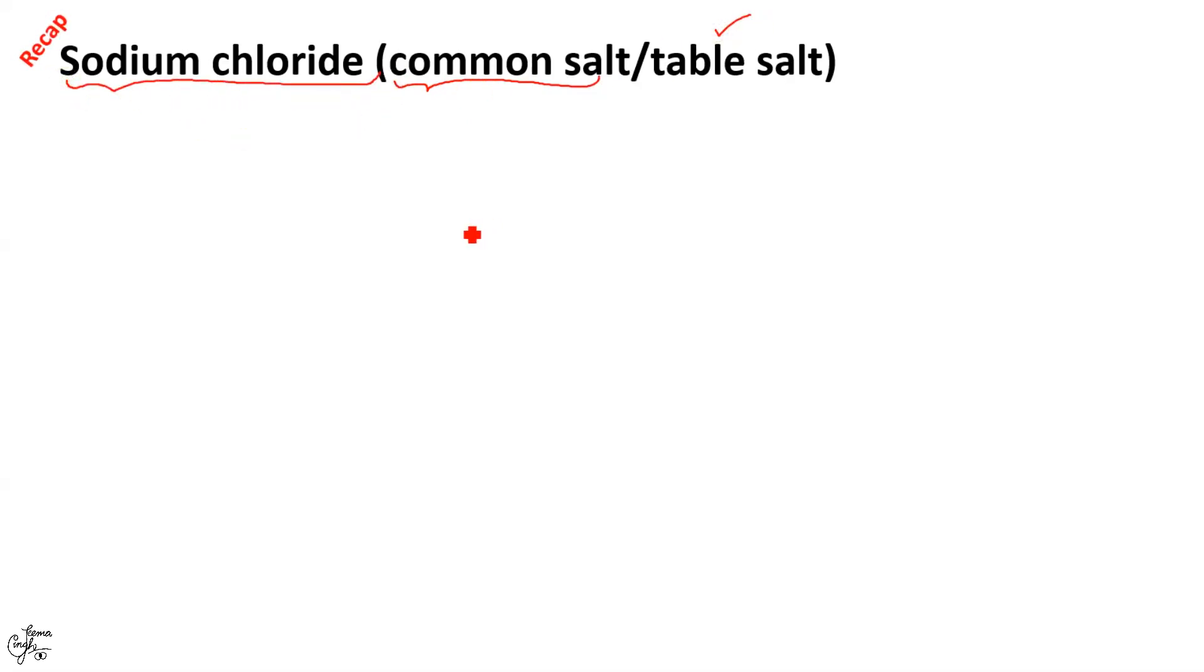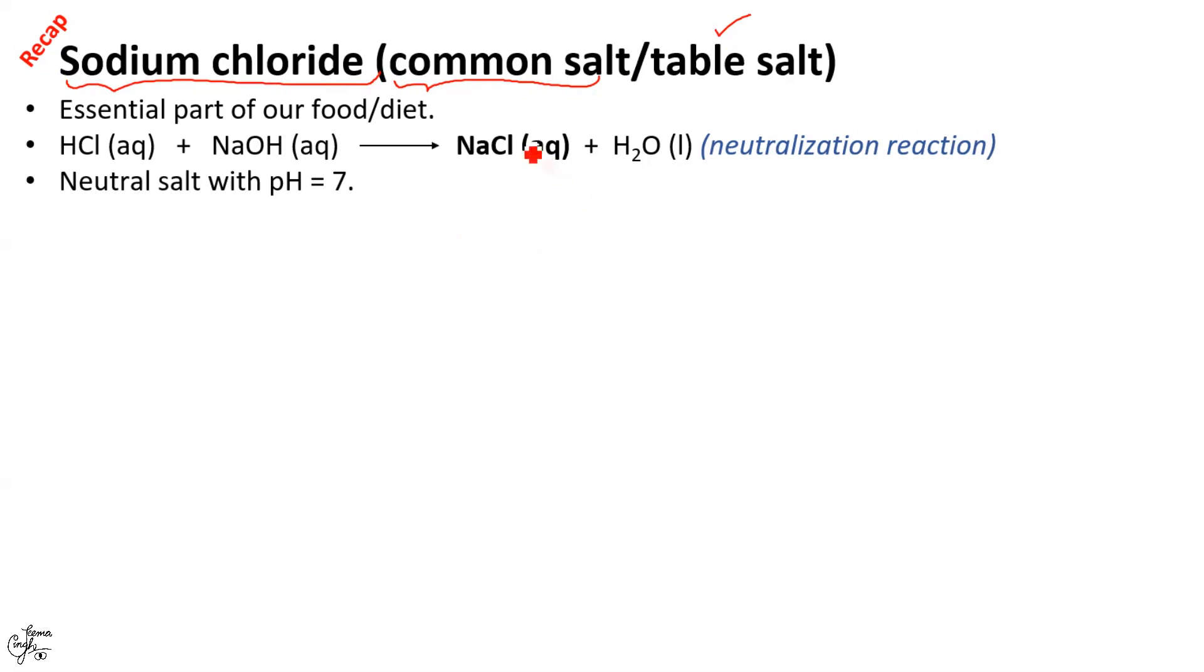By now you must be aware that one of the methods of obtaining sodium chloride is by the neutralization of hydrochloric acid with sodium hydroxide. Since NaCl is formed by the combination of a strong acid and a strong base it is neutral in nature with pH equal to 7.